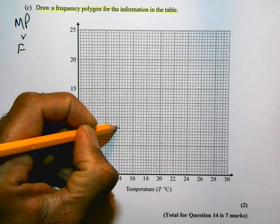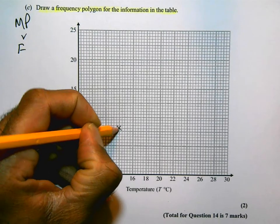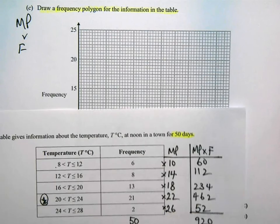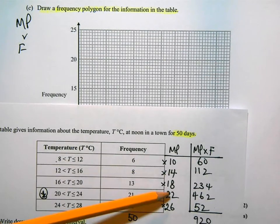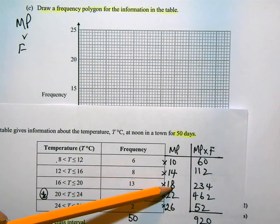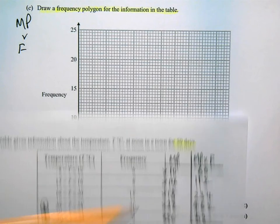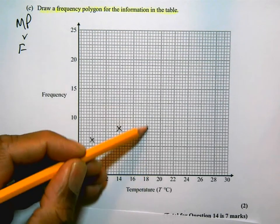The next point is 18. This is midpoint and the frequency is 13. So, 18 and then I go up to 10, 11, 12, 13.